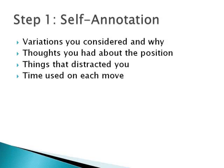The first step is what I call self-annotation. This is where you put down, on paper or on your computer, what you thought during the game and why you thought it — trying to capture all the thoughts, emotions, and actions you took. Examples include variations you considered and why, your thoughts about the position, plans you had, things that distracted you, whether you answered a phone call or browsed the internet during your opponent's move, and the time you used on each move. Also include any post-mortem analysis with your opponent. Basically, capture all thoughts before going into any deep analysis.